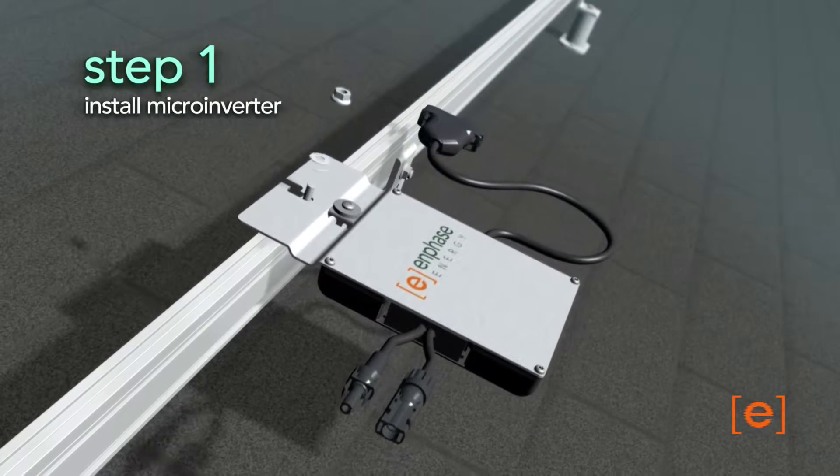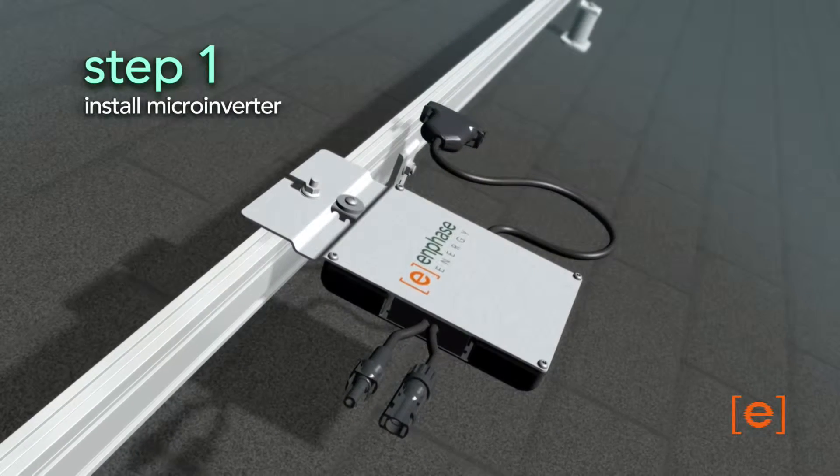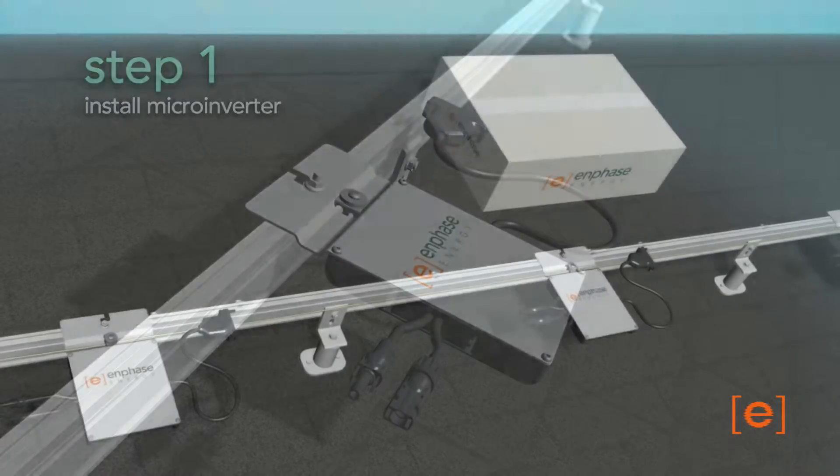First, install the microinverters in the appropriate locations on the racking. Next,